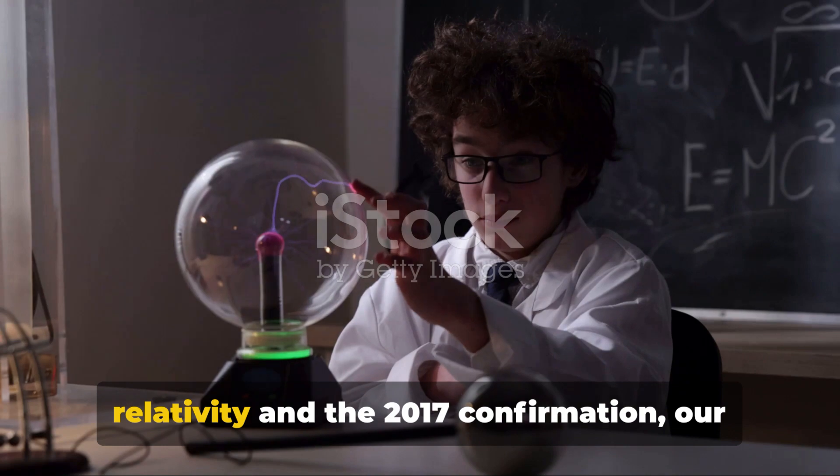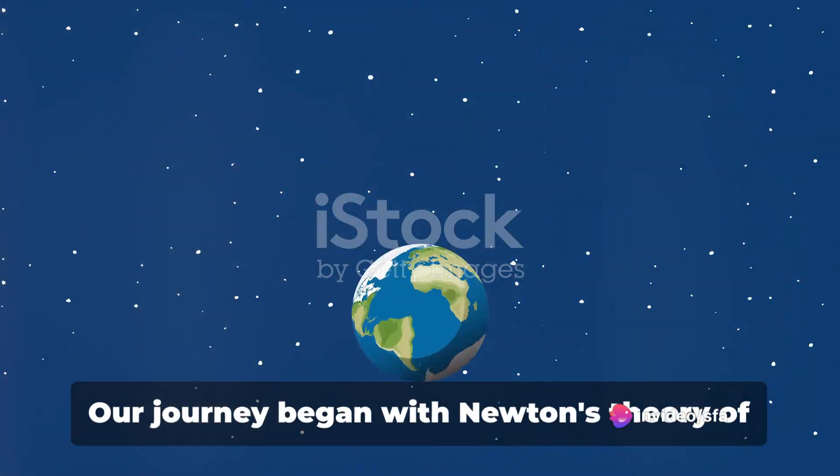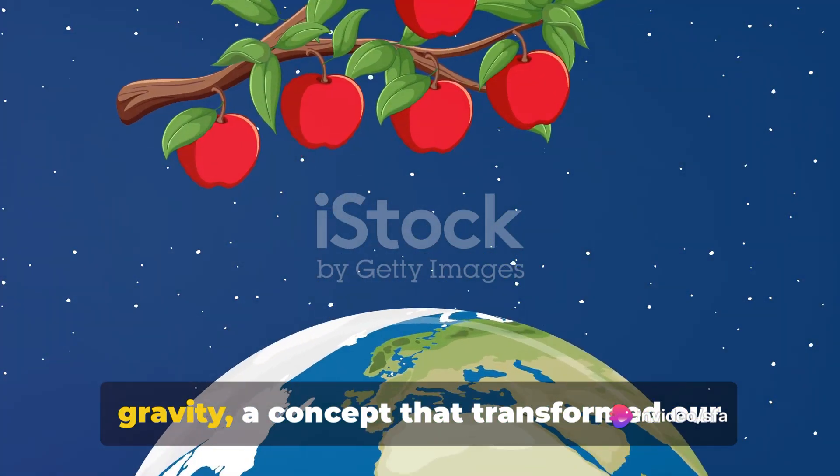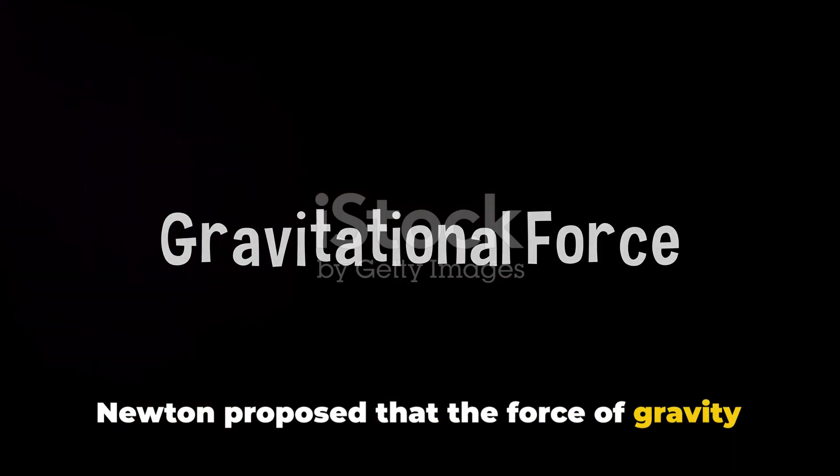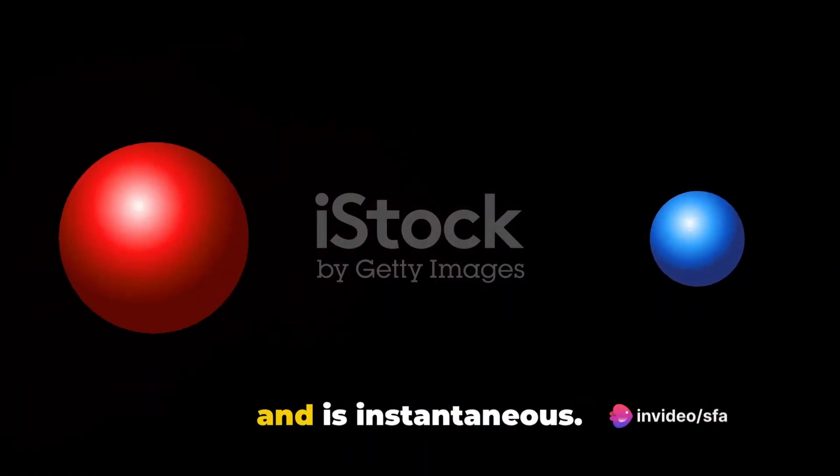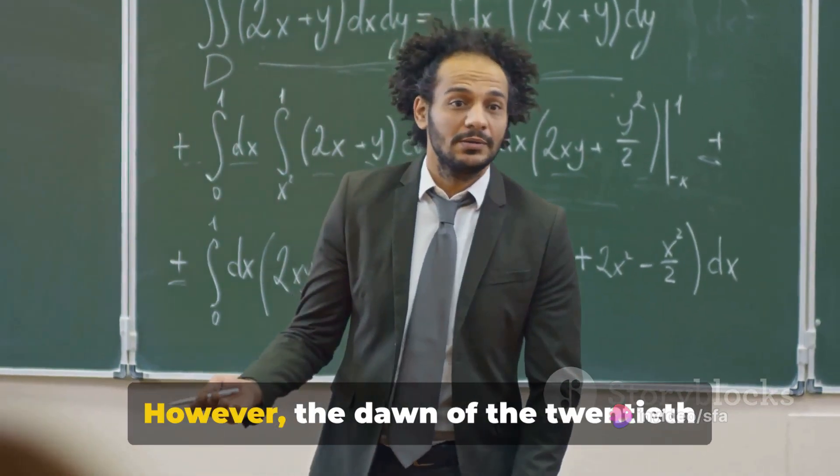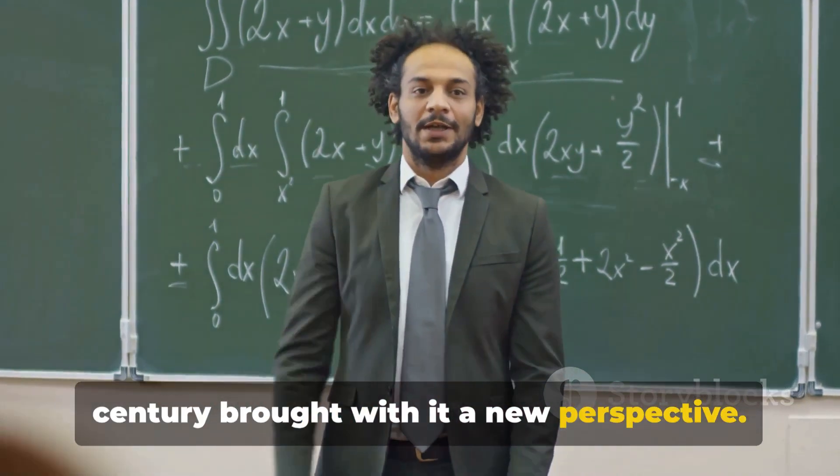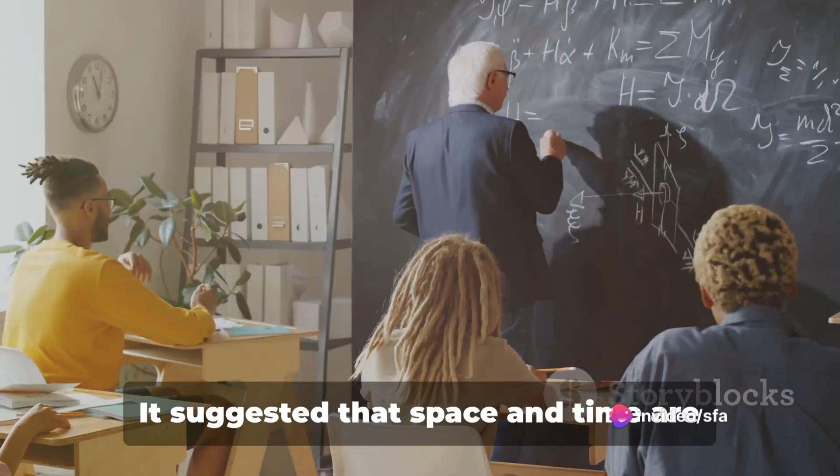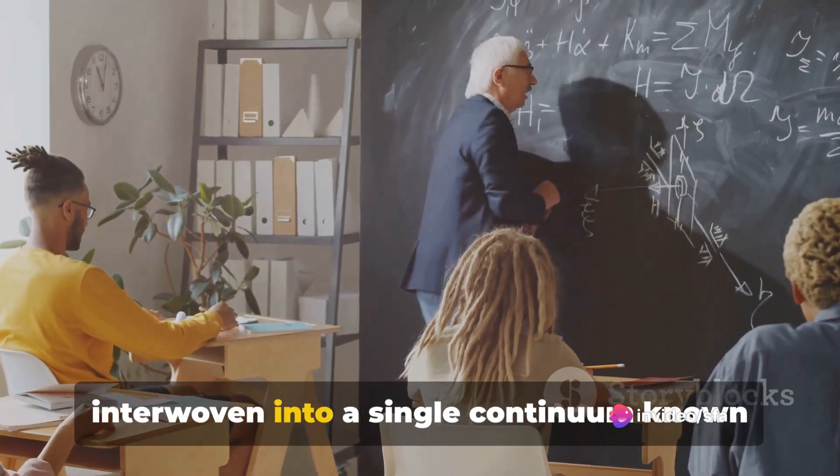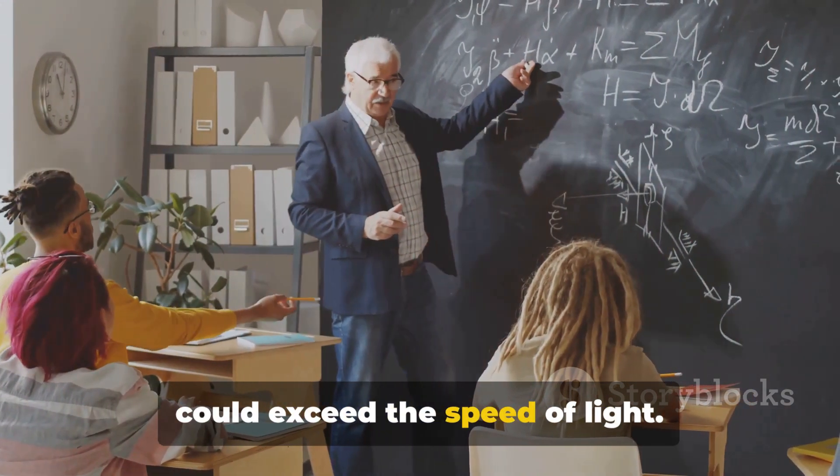From Newton's apple to Einstein's relativity and the 2017 confirmation, our understanding of gravity has evolved significantly. Our journey began with Newton's theory of gravity, a concept that transformed our understanding of the universe. Newton proposed that the force of gravity is universal, acting between all objects and is instantaneous. This view held sway for centuries, becoming a cornerstone of physics. However, the dawn of the 20th century brought with it a new perspective. Einstein's theory of special relativity challenged Newton's instantaneous gravity. It suggested that space and time are interwoven into a single continuum known as space-time. Consequently, nothing, not even gravity, could exceed the speed of light.